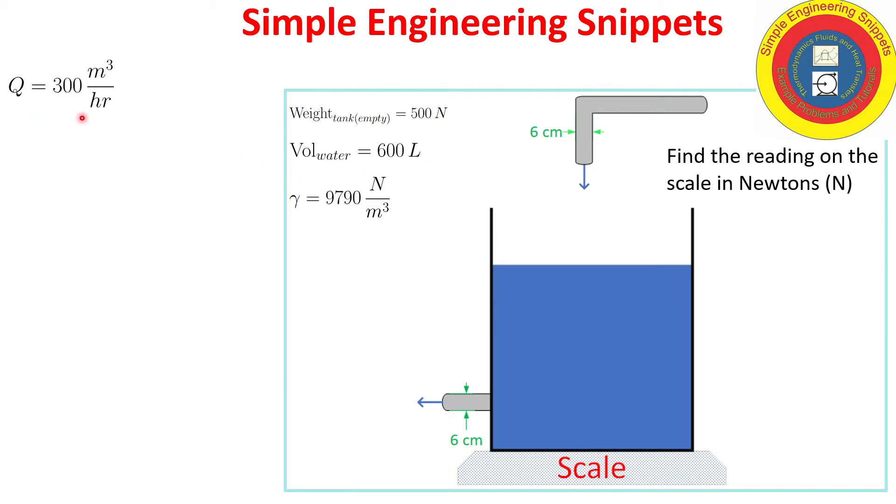But we also know the volumetric flow rate since the water level is steady. That is, the volumetric flow rate going in equals the volumetric flow rate going out. We're going to need a velocity so let's go ahead and calculate that. And we get 29.5 meters per second. That's a pretty healthy velocity.